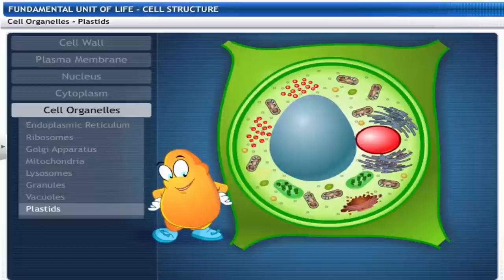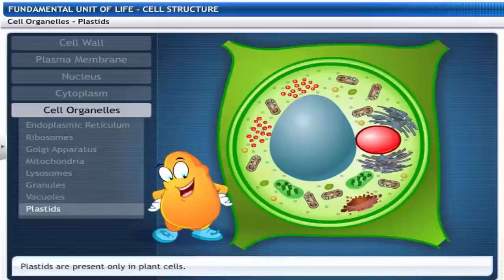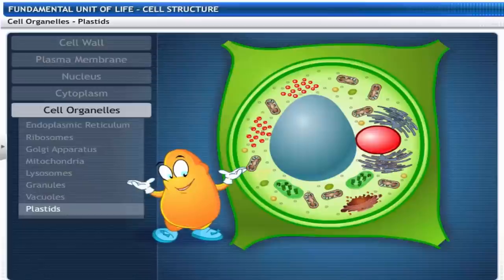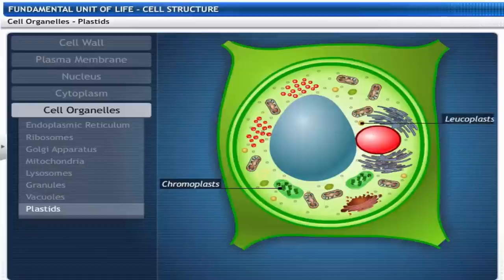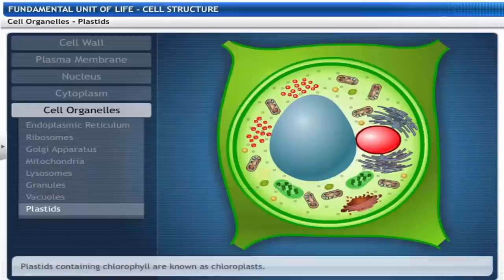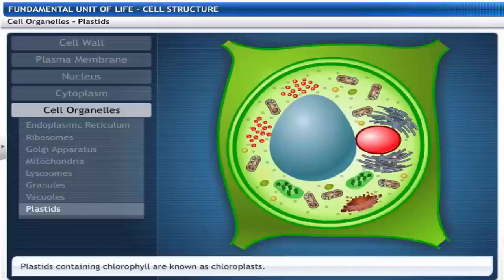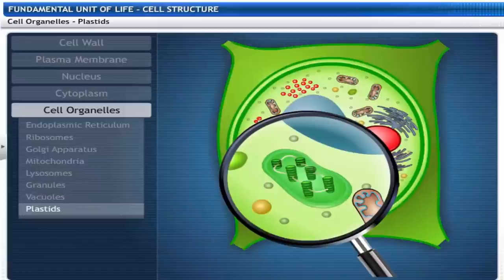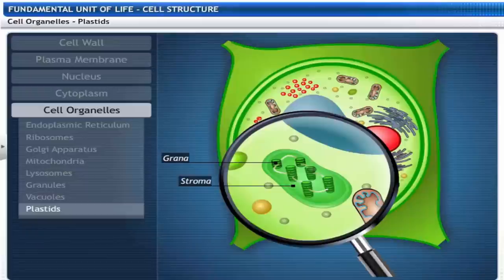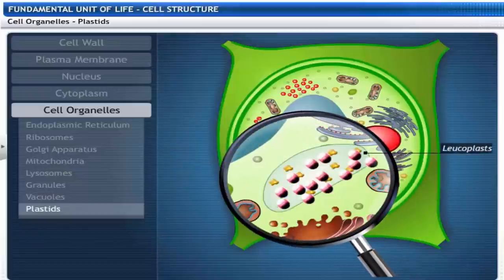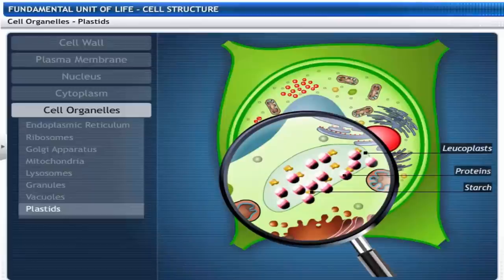You've seen this cell before, haven't you? Yes, it's a plant cell. I'll show you an organelle present only in plant cells. The plastids. There are two types of plastids, colored plastids called chromoplasts and colorless plastids called leukoplasts. Plastids containing chlorophyll are known as chloroplasts. Chloroplasts are important for photosynthesis. Chloroplasts have membranous layers called grana in a ground substance called stroma. Leukoplasts store starch, oils and protein granules.